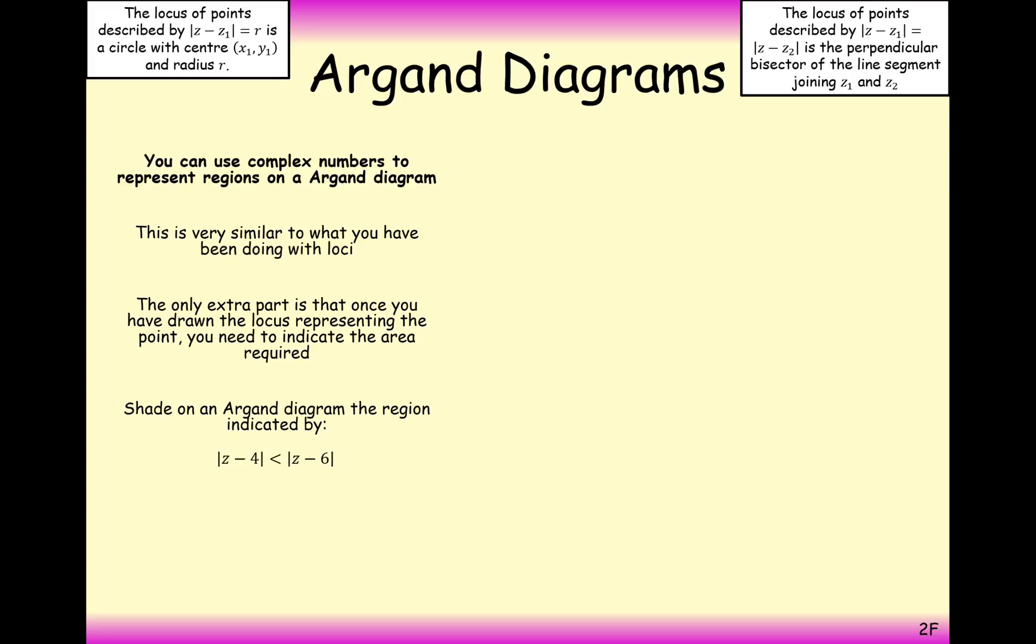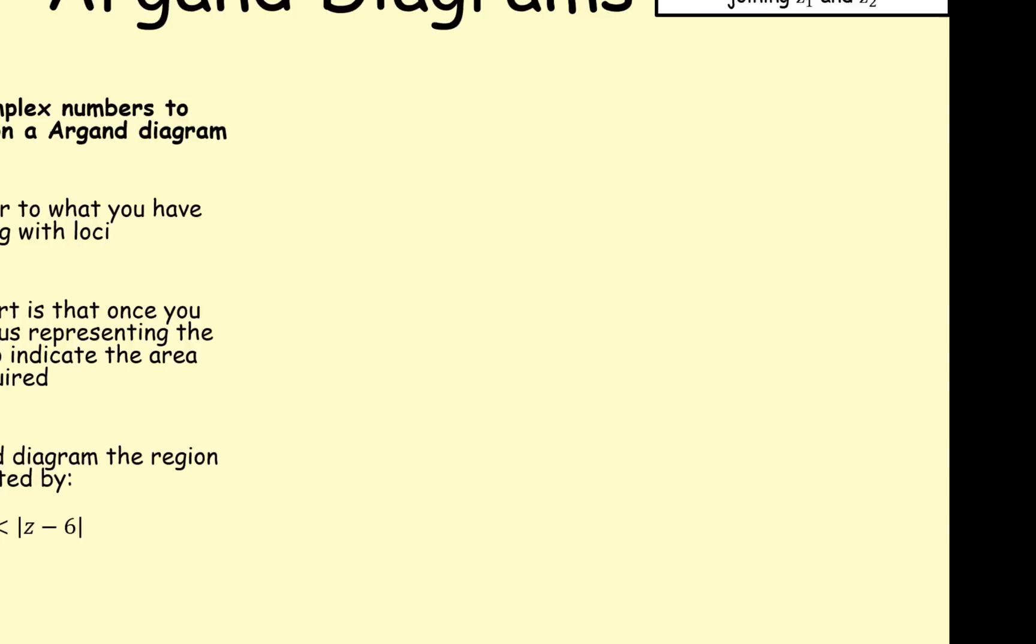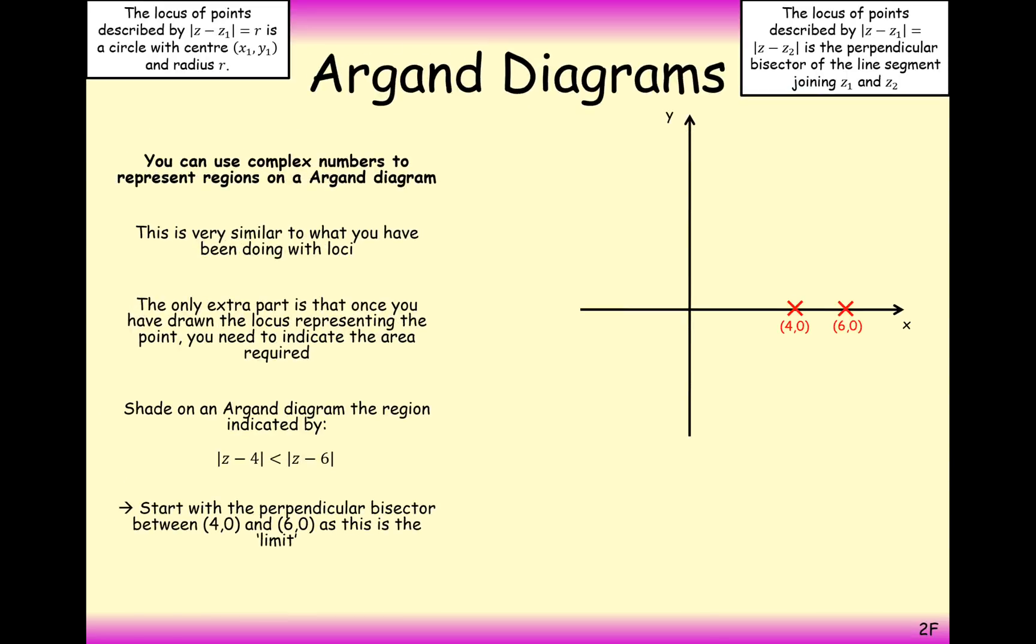So another one that we've worked on previously is a perpendicular bisector. Now, in this case here, what we're looking at is for the distance away from 4 to be less than the distance away from 6. So the way we're going to do this is by drawing a nice little diagram. 4 and 6, it cuts a perpendicular bisector at 5.